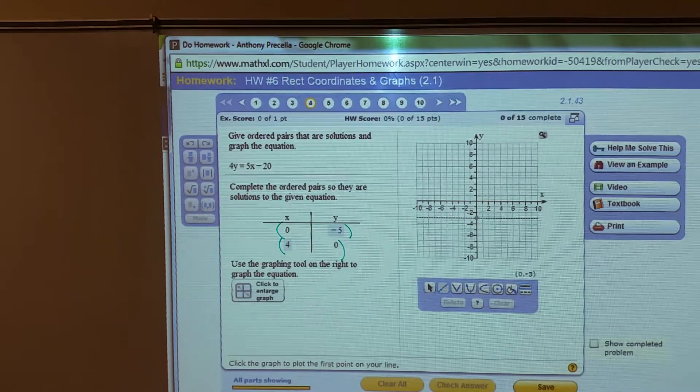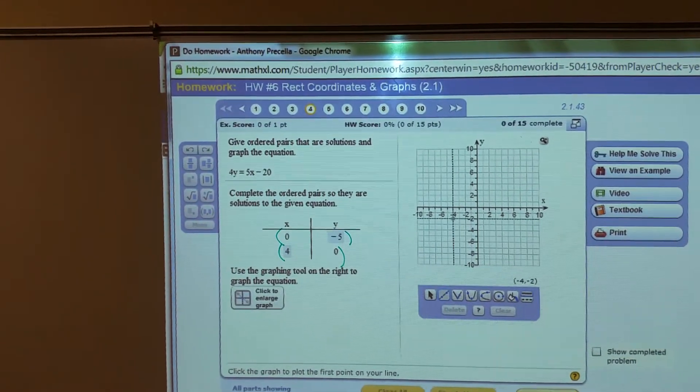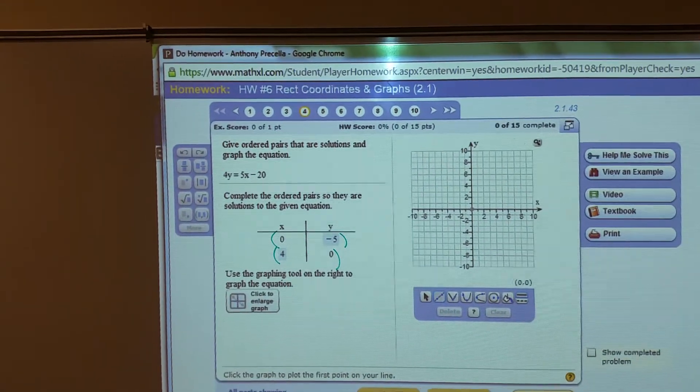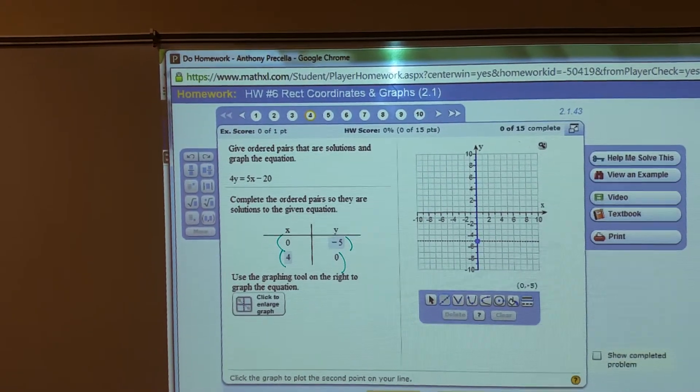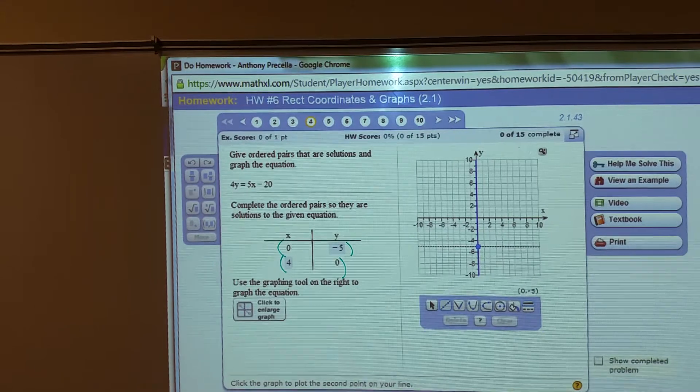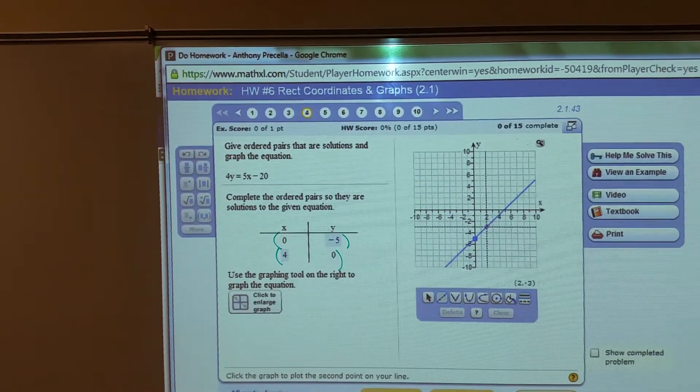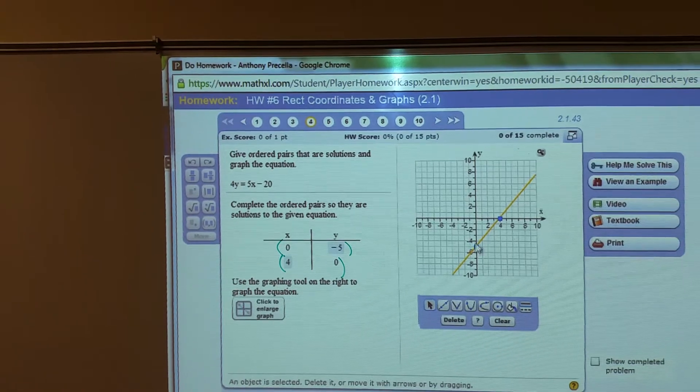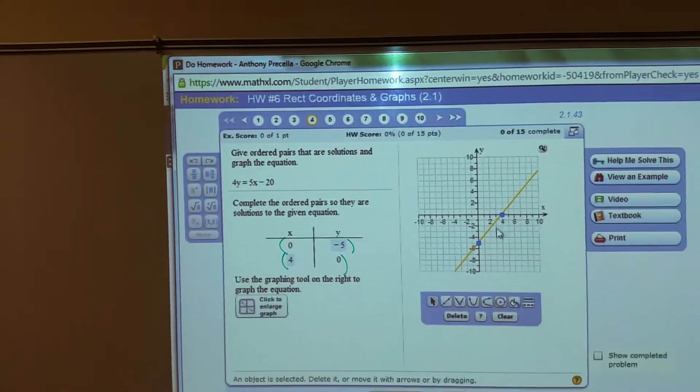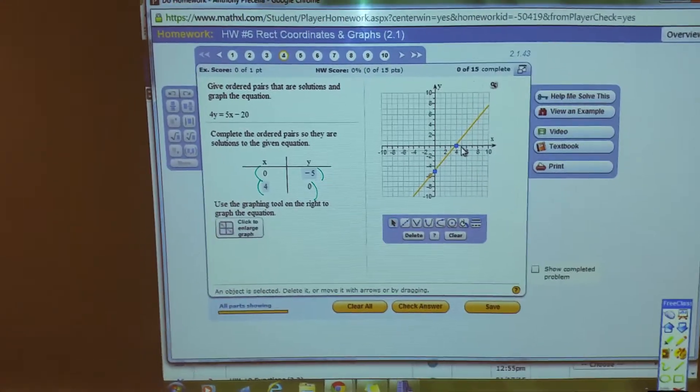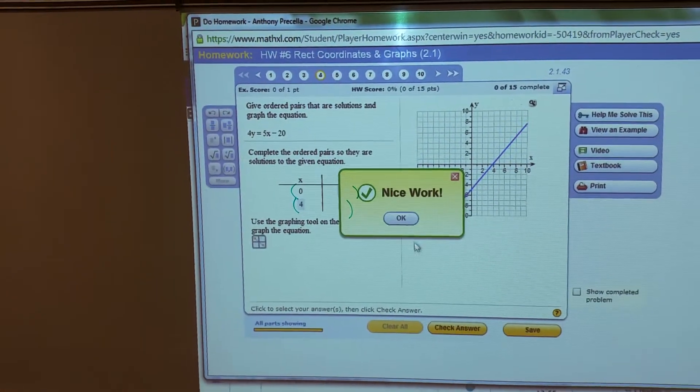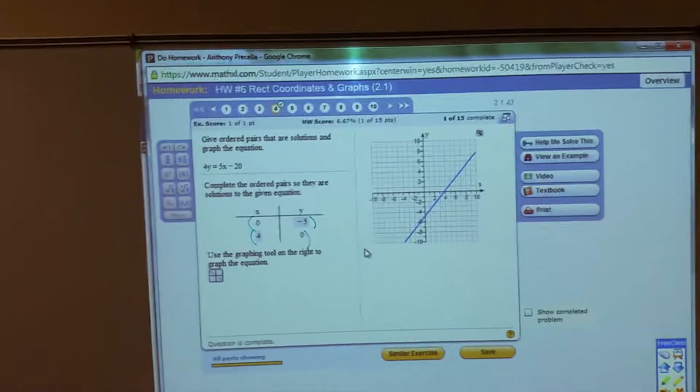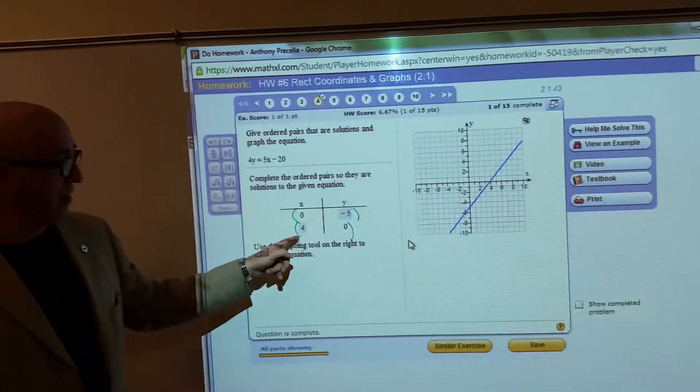Click the line tool. And now when you move around up here, you've got to plot its first point. Over zero, down five. There. Now we need to plot another point. Right four, up zero. So I'll plot it over zero, down five. Right four, up zero. Now I'll say check answer.